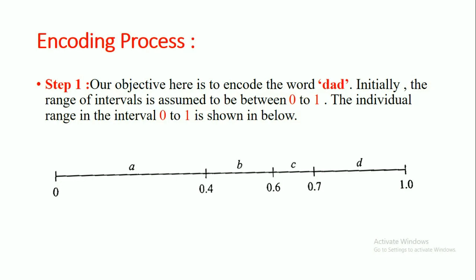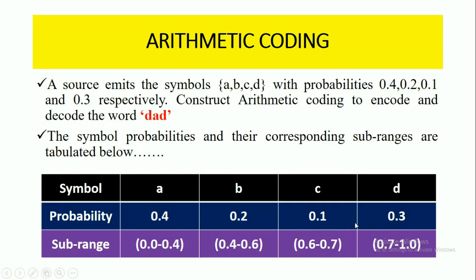Now we will go for arithmetic coding. In the encoding process, step 1: our objective is to encode the word DAD. Initially, the range of intervals is assumed to be between 0 to 1, because the probability changes from 0 to 1. The individual ranges in the interval 0 to 1 are: for A, 0.0 to 0.4; for B, 0.4 to 0.6; for C, 0.6 to 0.7; and for D, 0.7 to 1.0, as given in the table.